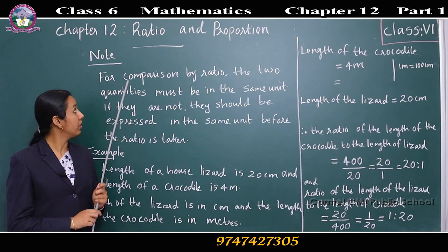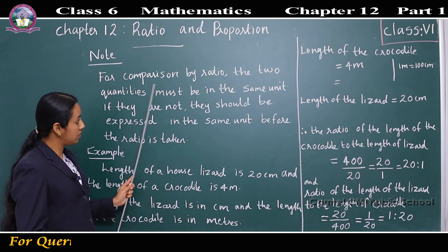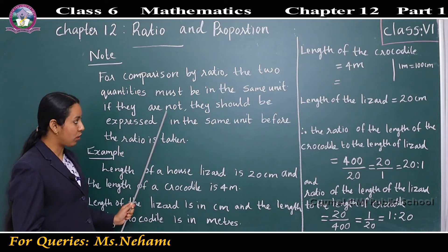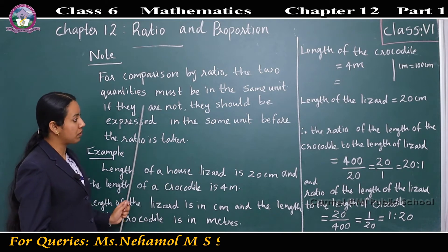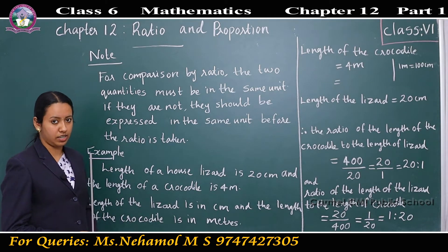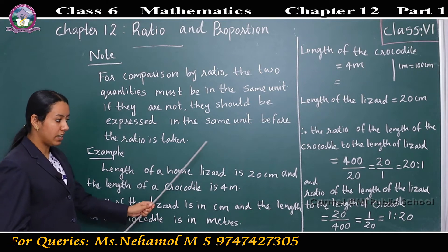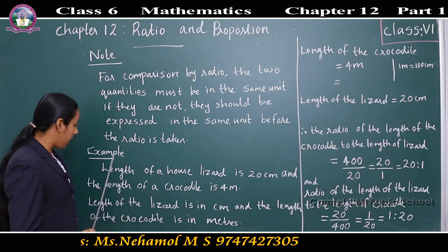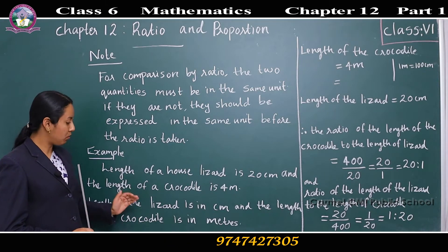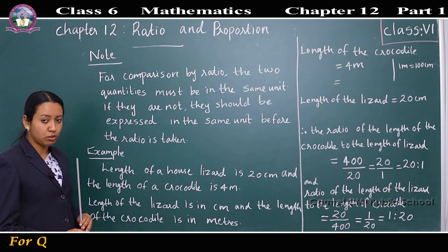Note: for comparison by ratio, the two quantities must be in the same unit. If they are not, they should be expressed in the same unit before the ratio is taken. Consider this example: the length of a house lizard is 20 centimeters and the length of a crocodile is 4 meters. Suppose the lizard told the crocodile, 'I am 5 times bigger than you' — is that true?